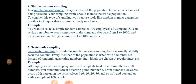You have fixed the starting number as 6, and now you choose every 10th member: 6th, 16th, 26th, 36th, 46th, 56th, and so on. You end up with a sample of 100 people. This is systematic sampling — you fix a starting number and then select every nth person, for example every 3rd or every 10th person.